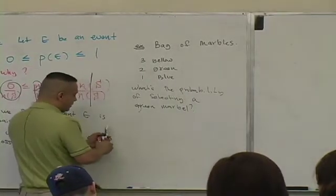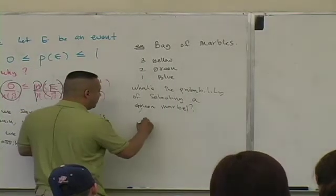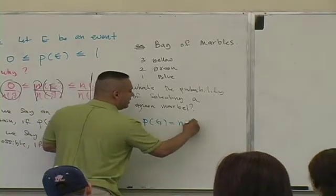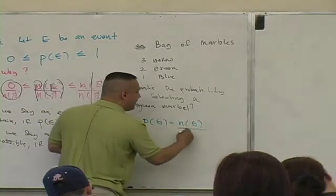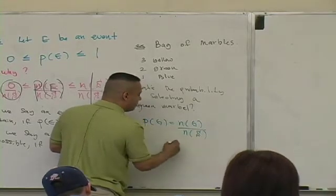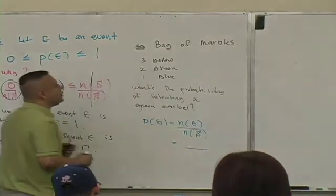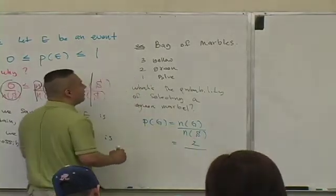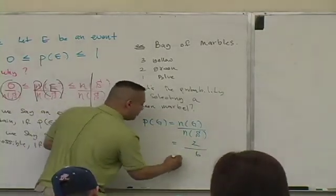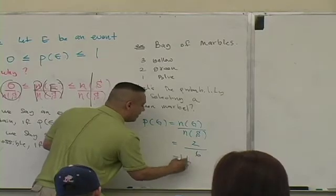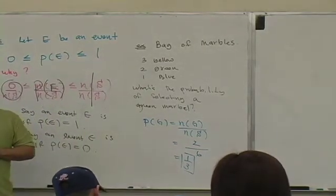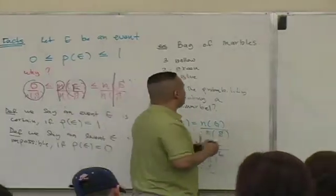So you use your definition. Can you tell me what the definition is? The probability that you select a green marble is n(g), the number of green marbles divided by the total number of possible marbles. How many marbles are green in this bag? Two. How many marbles are in the bag? Six. So the probability is one third. You guys with me on that?